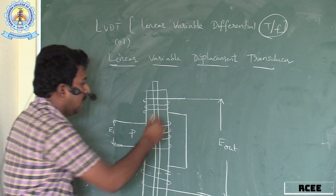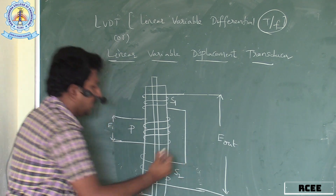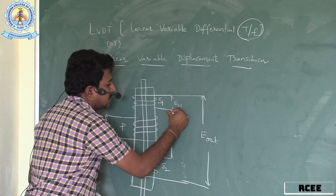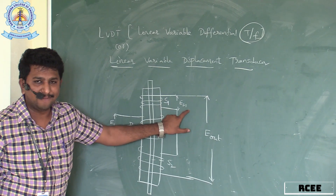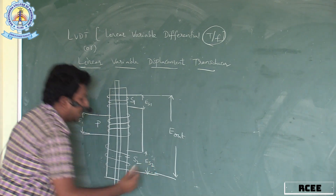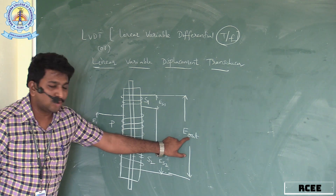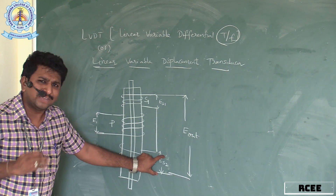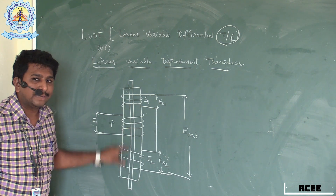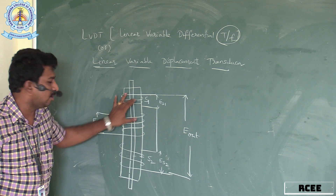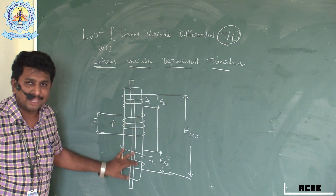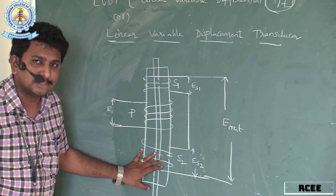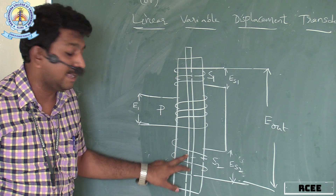LVDT consists of two secondary windings: S1 and S2. ES1 stands for output across secondary winding one, ES2 stands for output across secondary winding two. The final output voltage Eout is the difference between ES1 and ES2. These two secondary windings have equal numbers of turns and are connected in series opposition.